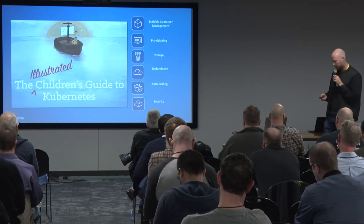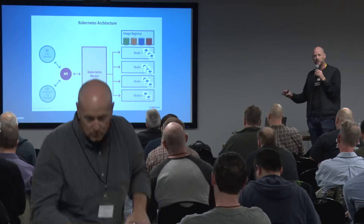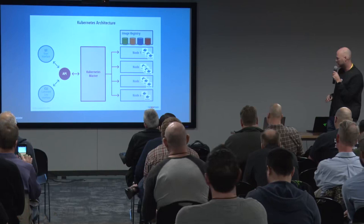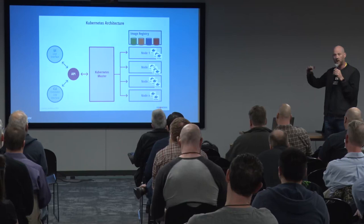This is a high-level architecture of Kubernetes. Essentially there is the notion of a cluster. A cluster has an API — everything is driven by the API. You can use a UI, but you'll see why that's a good or bad idea later. There's something called kubectl which allows you to manage things at scale. There's a master, there are nodes, and then there's a notion of pods which are essentially your containers, and a registry that you pull images from.